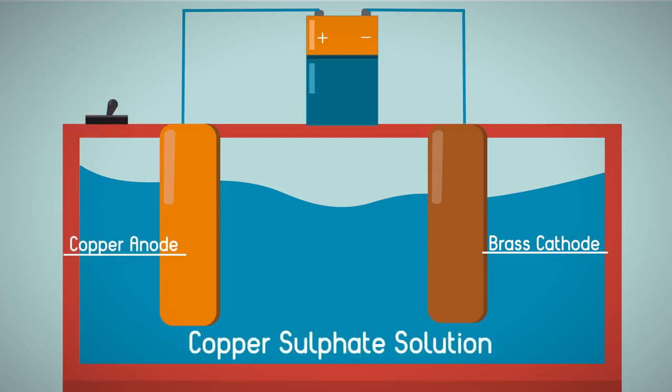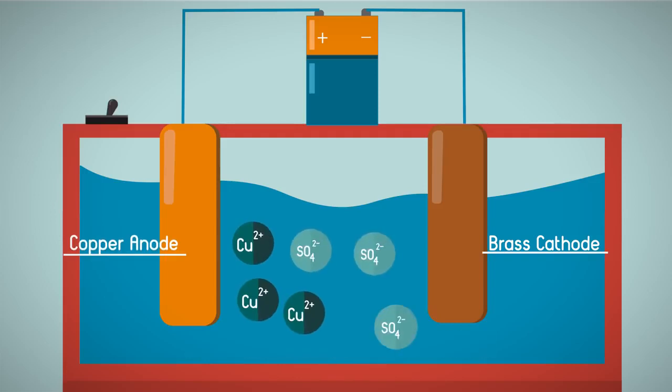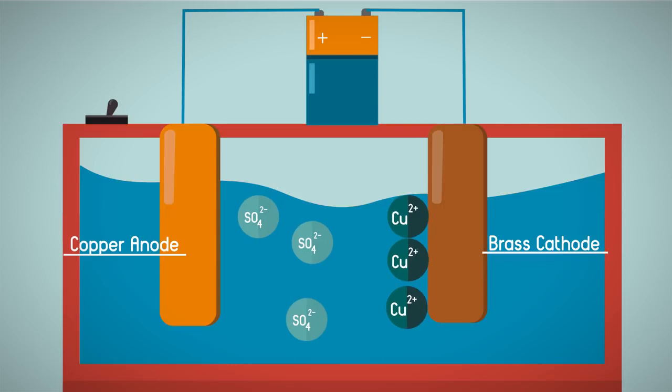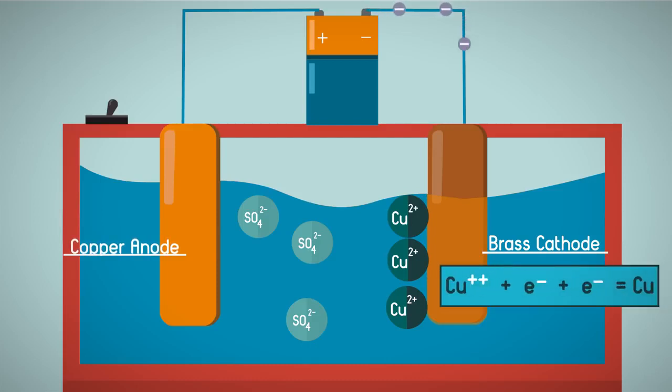Copper sulfate solution contains blue copper ions and colorless sulfate ions. The copper ions are positively charged and so are attracted to the negatively charged brass cathode. The copper ions deposit onto the brass, producing the thin copper plate. The positively charged copper ions gain electrons, which is known as reduction.